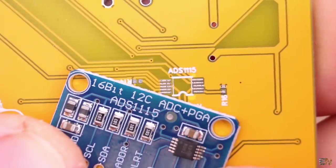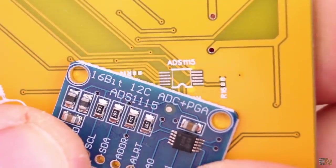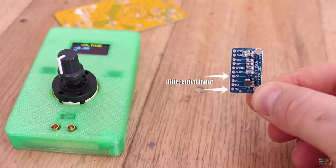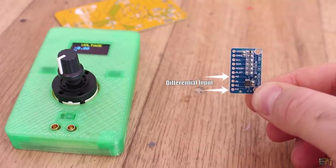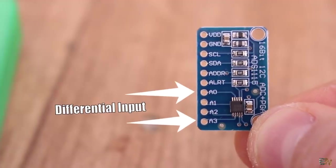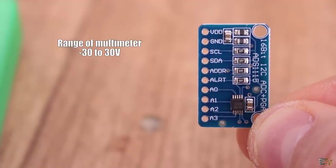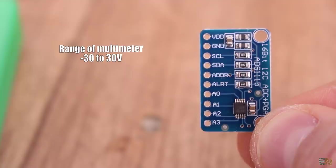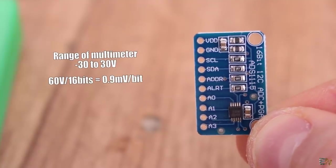But there's even more. The ADS1115 IC has the option of differential measurement, so now we could also measure negative voltage. The range is from minus 30 to positive 30 volts and with 16 bits, that's a resolution of 0.9 millivolts, which is quite good.